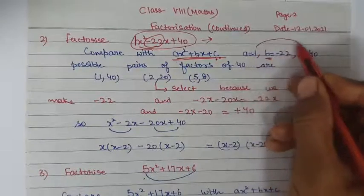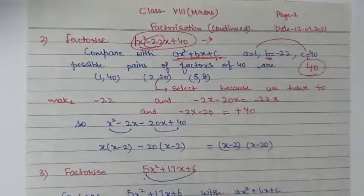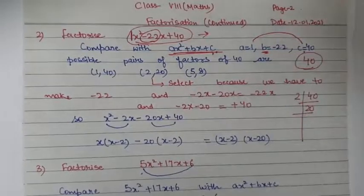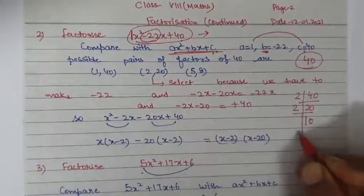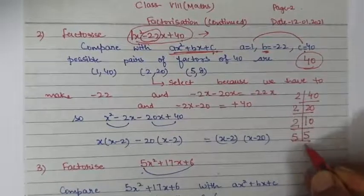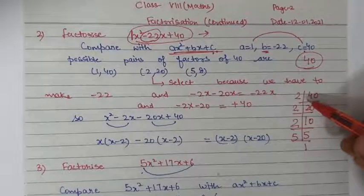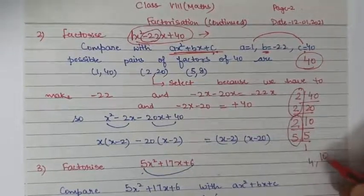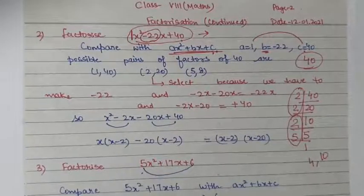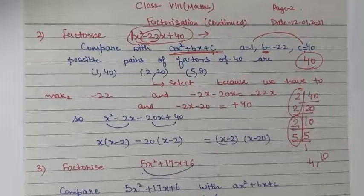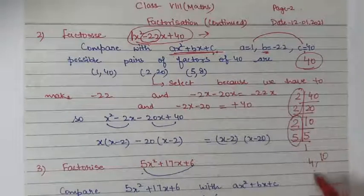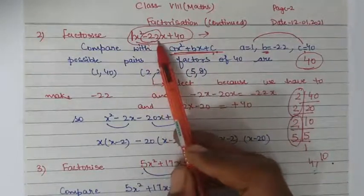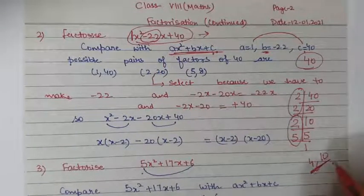Now multiply a with c: 1 × 40 = 40. Let us make the factors of 40: 20, then 2 × 10 = 20, 2 × 5 = 10, 5 × 1 = 5. Whatever pair we make, their addition or subtraction should give minus 22. The pair (4, 10) cannot give 22, so leave those. Also (8, 5) is not possible.